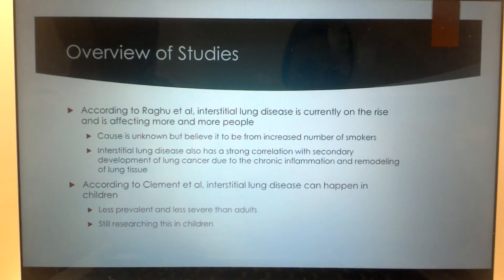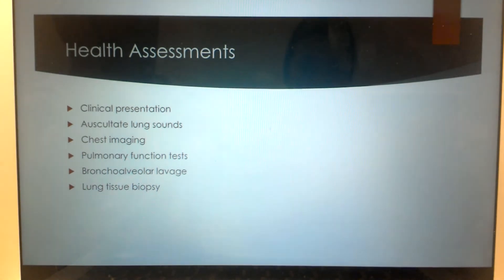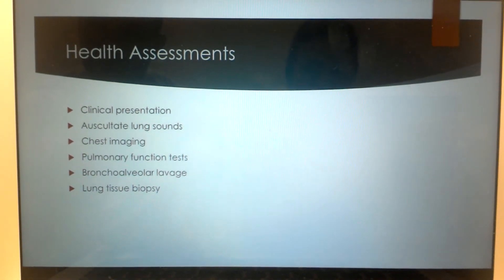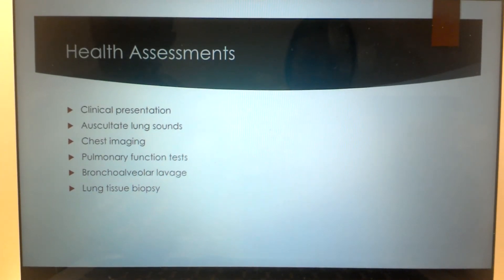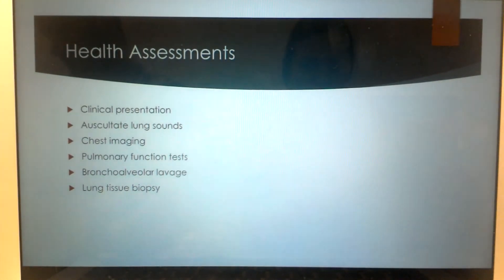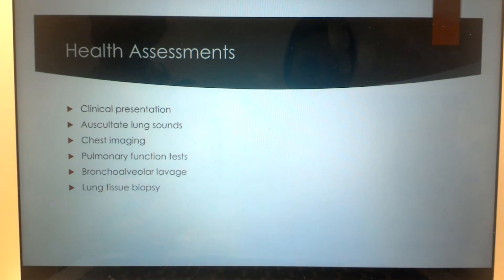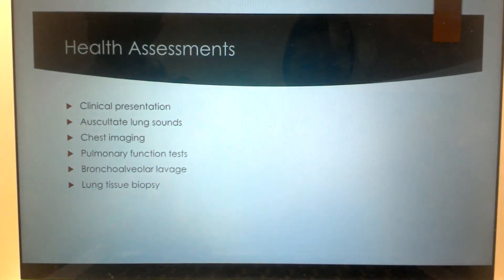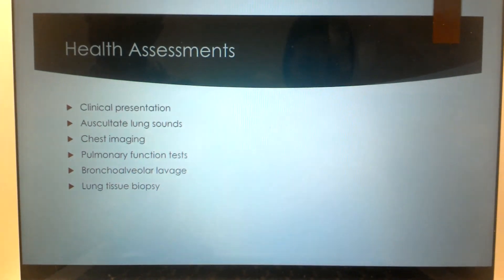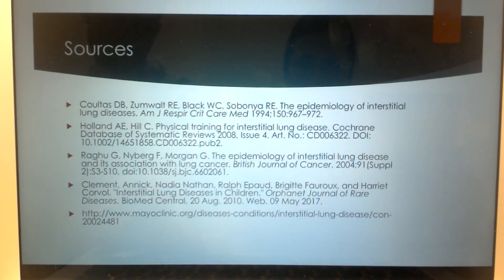Health assessments that can be performed if you're concerned a patient might have ILD include looking at their clinical presentation — shortness of breath and coughing — then listening to their lung sounds. From there, chest imaging with X-rays can show how much scar tissue there is. Pulmonary function tests, bronchoalveolar lavage, and if a clear diagnosis hasn't been reached, a lung tissue biopsy can confirm the diagnosis and show the extent of lung scarring.